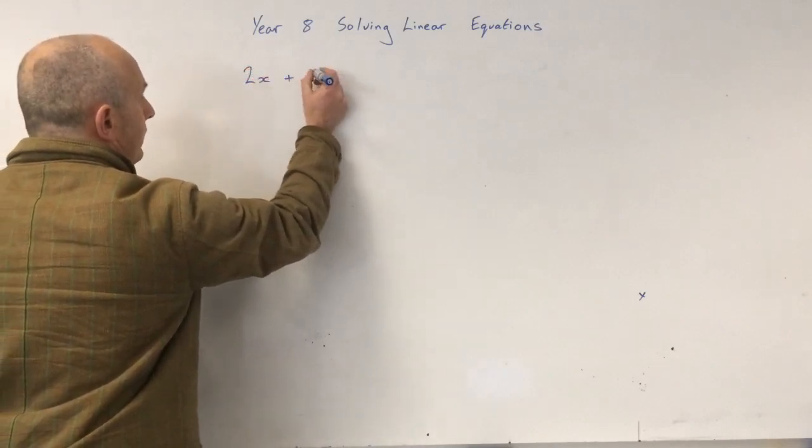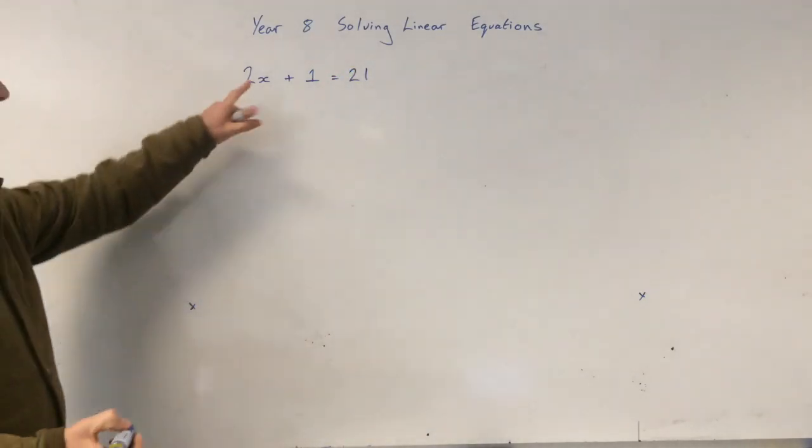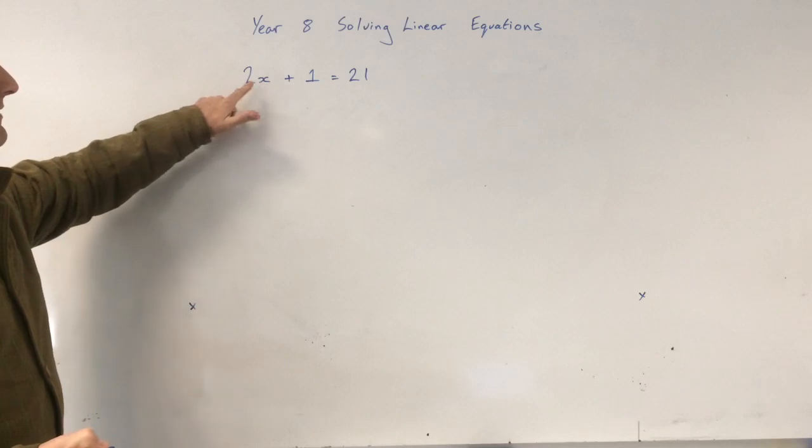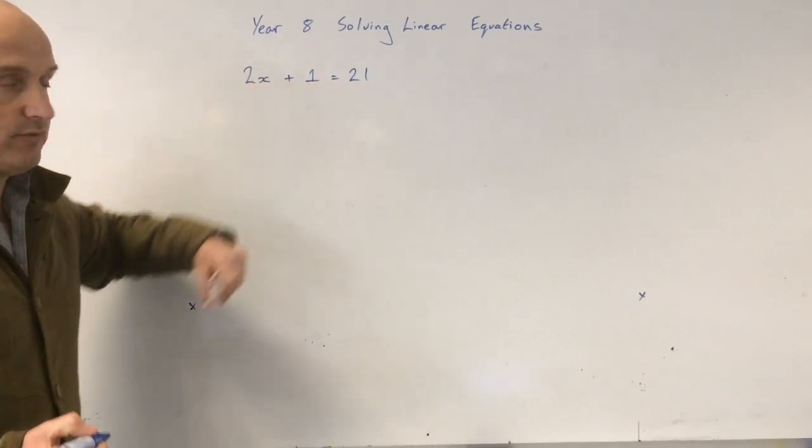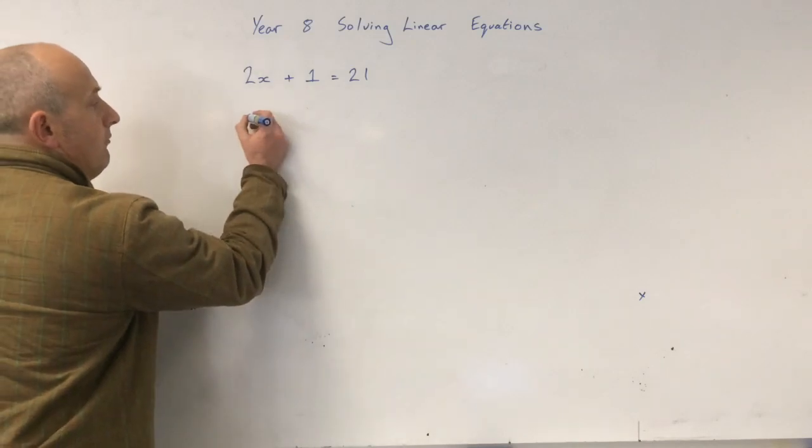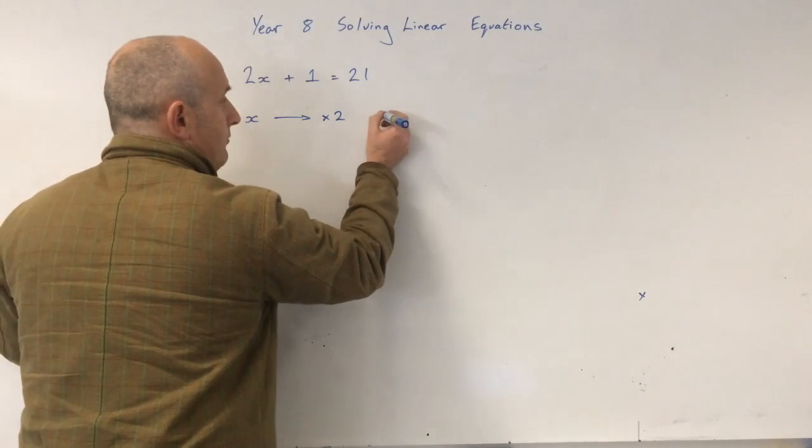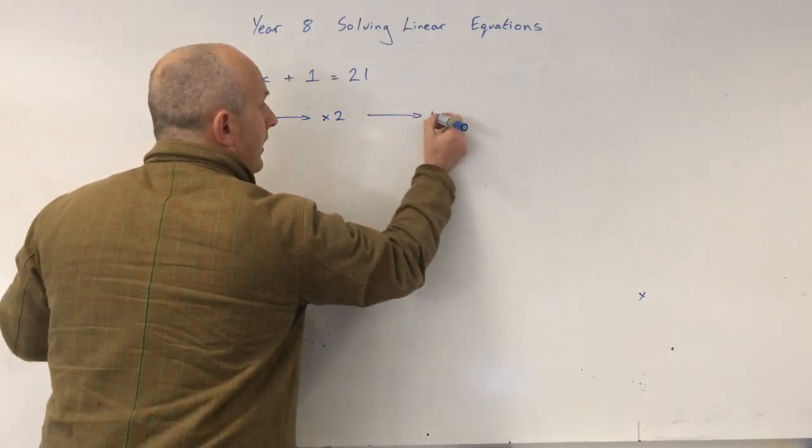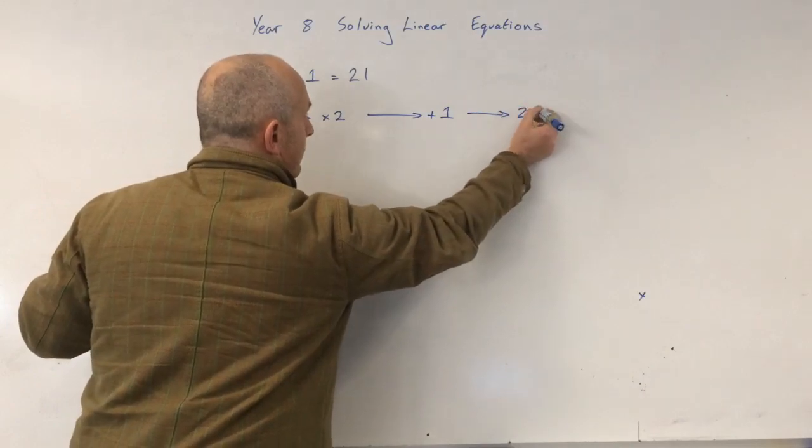2x plus 1 equals 21. Okay, so what this means is x times 2 plus 1 equals 21. So I've got x, I multiply by 2, I plus 1, and the answer is 21.